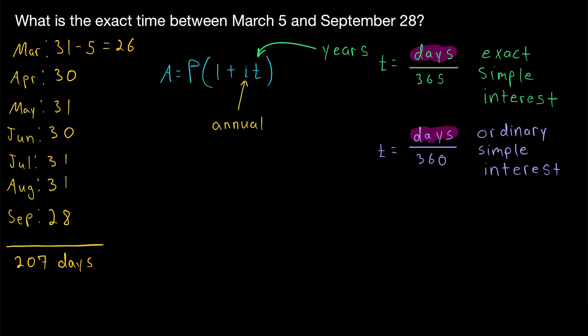That's all there is to determining exact time. If you were using this to calculate simple interest, you would divide the number of days that have passed — 207 — by 365 or 366 if using exact simple interest, or by 360 if using ordinary simple interest.